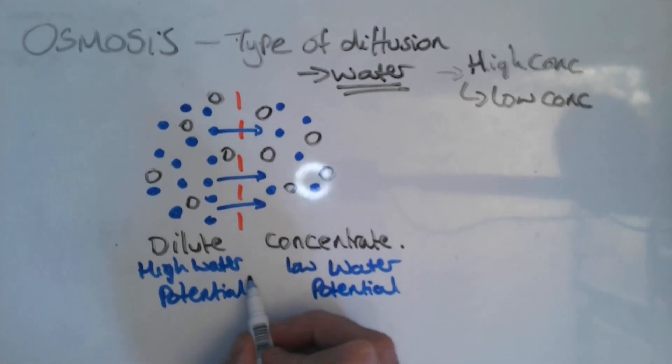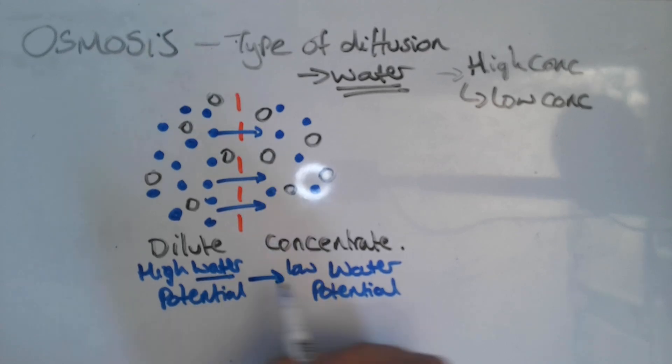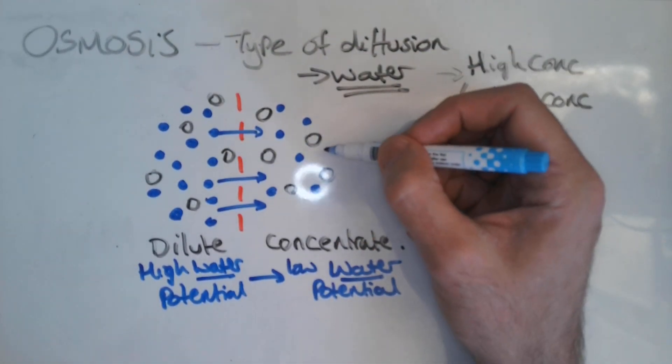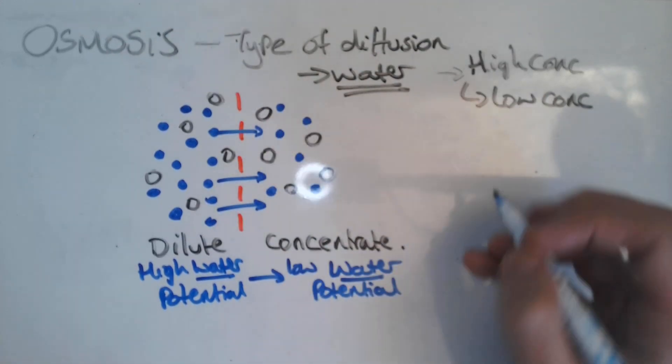So they're going to move from an area of high concentration of water to an area of low concentration of water, and what that means is this solution is going to become more dilute and over time we'll reach an equilibrium.